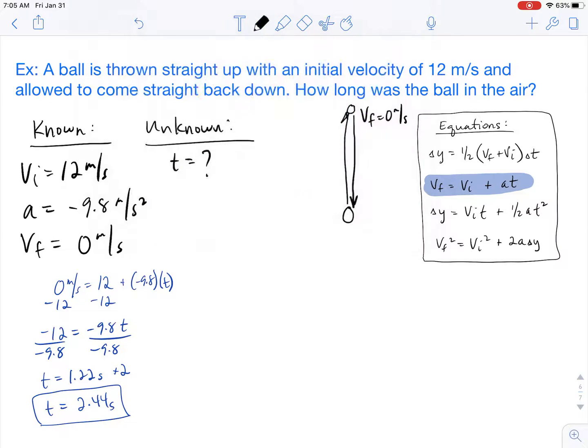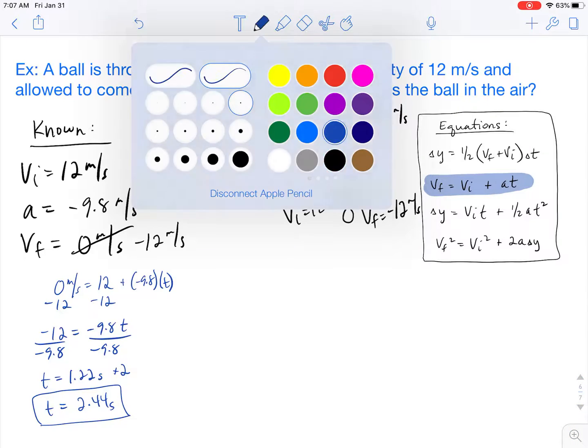Now the other method is that we know that acceleration due to gravity is constant. So if the ball initially starts at 12 meters per second, by the time that it comes back down to its original position, that velocity is going to be the same but just in a negative direction. It's a downward direction. So we could set VF to negative 12.